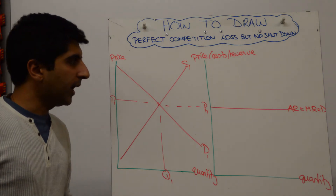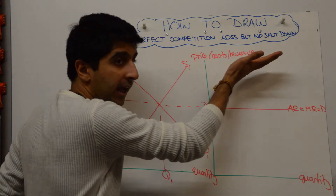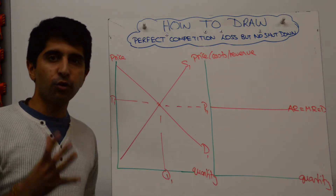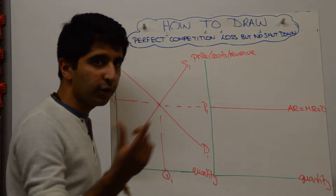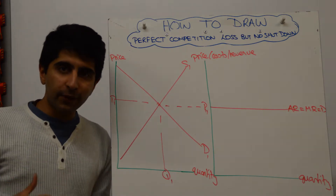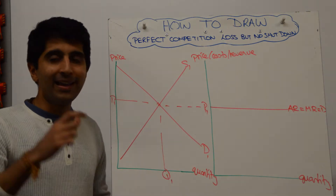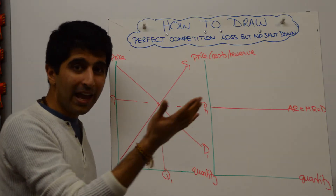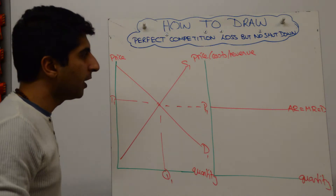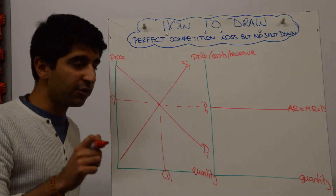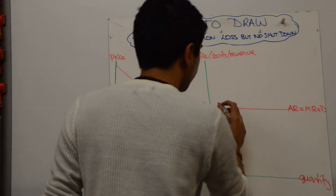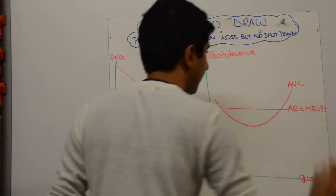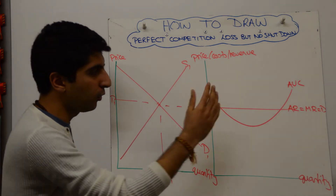A loss is being made, so AC is going to be higher than AR. But the way to construct this diagram is first to draw your AVC curve. These firms are not going to shut down — the shutdown condition is when AR is less than AVC. So if they're not shutting down, AR has got to be greater than AVC. Draw the average variable cost curve below your average revenue, and label it AVC.